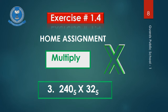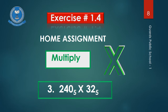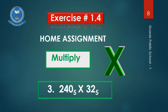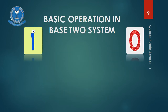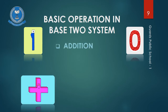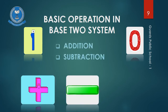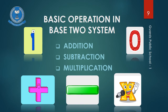Exercise number 1.4, your home assignment is multiply question number 3, which is 2, 4, 0 with base 5 multiplied by 3, 2 with base 5. Now, basic operations in base 5 are complete. Now we will learn basic operations in base 2 system — including addition, subtraction and multiplication in base 2 system.